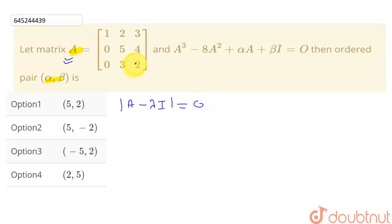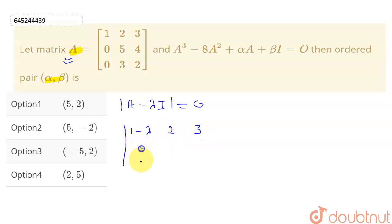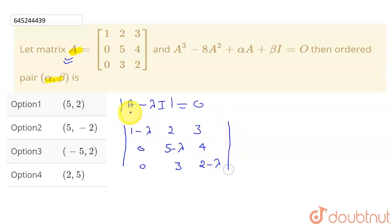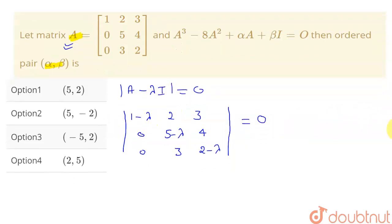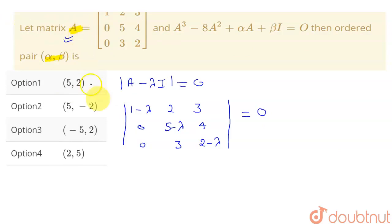A is this given matrix. So A minus λI will be equal to: first row (1−λ, 2, 3), second row (0, 5−λ, 4), third row (0, 3, 2−λ). Setting the determinant of A minus λI equal to 0 gives the characteristic equation.